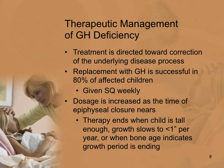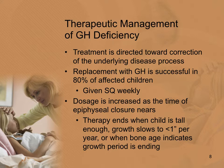Treatment of growth hormone deficiency is directed at correcting the underlying cause — removing a tumor if present, or treating the pituitary or producing organ directly. Growth hormone replacement is successful in about 80% of affected children. It is typically a sub-Q injection given weekly. The dosage increases as we approach epiphysis closure, and therapy ends when the child is tall enough, growth slows to less than one inch per year, or bone age indicates the growth period is ending.